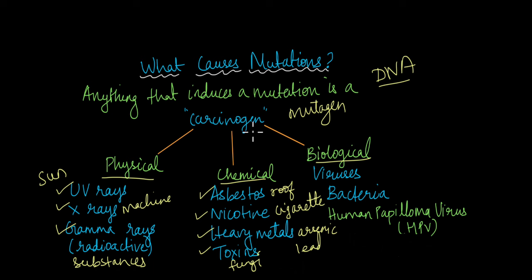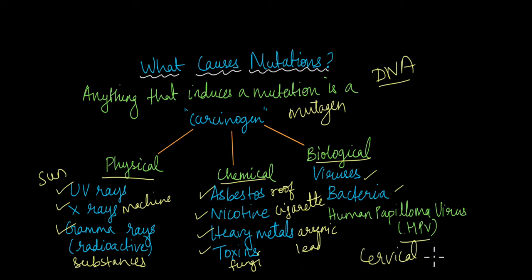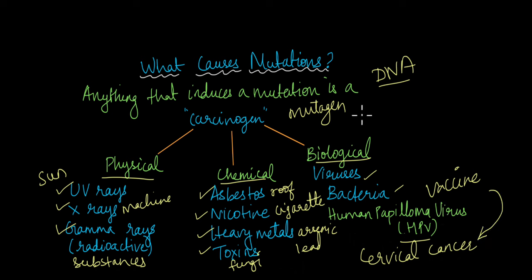Biological carcinogens are any living material or living being that can lead to DNA damage, like viruses and bacteria. One major type of virus that can cause cancer is the human papilloma virus, or HPV, which has been associated with a lot of cases of cervical cancer in women. Fortunately, there is a vaccine that can prevent infection by HPV, which means we can actually prevent the occurrence of this type of cancer.